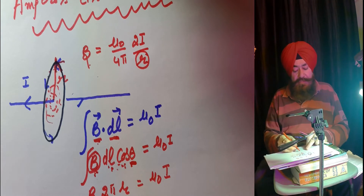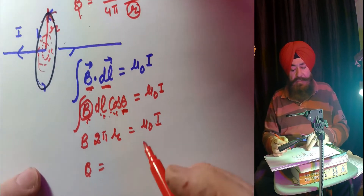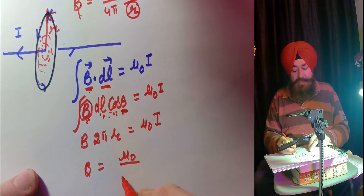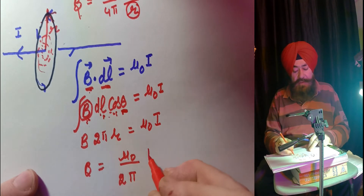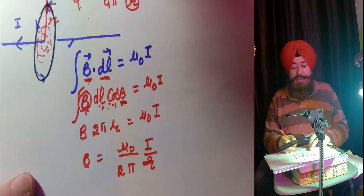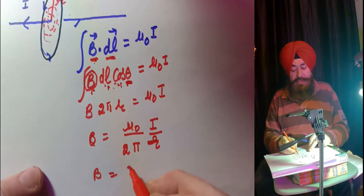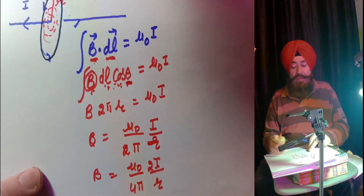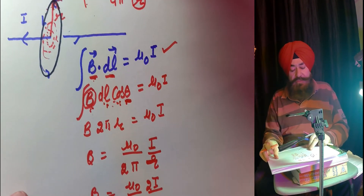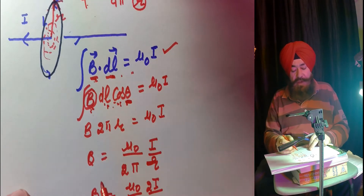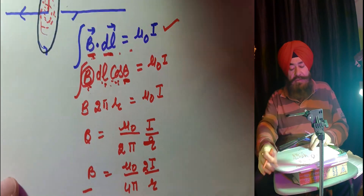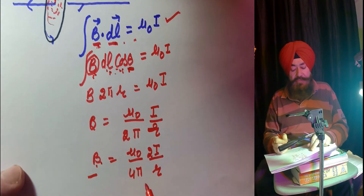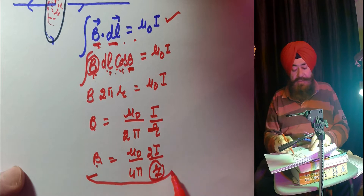So B·2πR equals μ₀i. From this, B equals μ₀/2π · i/R, or equivalently B equals μ₀/4π · 2I/R. So I used Ampere's Circulation Law and proved the magnetic field formula — the magnetic field in magnitude at a distance R from the current is this expression.